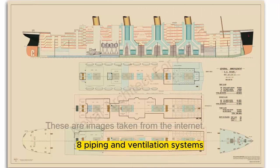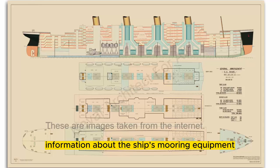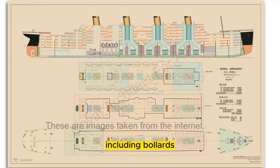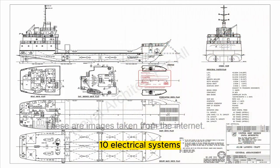8. Piping and Ventilation Systems: The routing of key piping systems, including fuel lines, water pipes, and ventilation ducts. 9. Mooring Arrangement: Information about the ship's mooring equipment, including bollards, cleats, and winches.